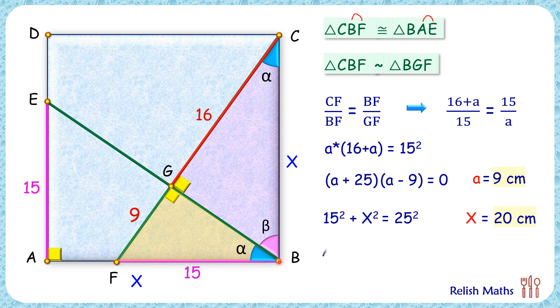As the side length is 20 centimeter, thus the area of the square is 400 centimeter square, and that's our answer. I hope you enjoyed the solution. I will see you in the next video. Till then, tata bye bye.